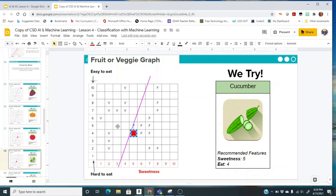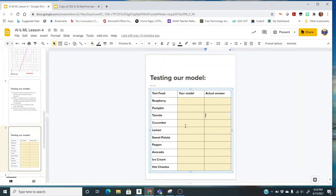It kind of depends on how you do your line, if it was a fruit or a vegetable for you. And so once again, there's not a right or wrong answer. It's what did your model predict?